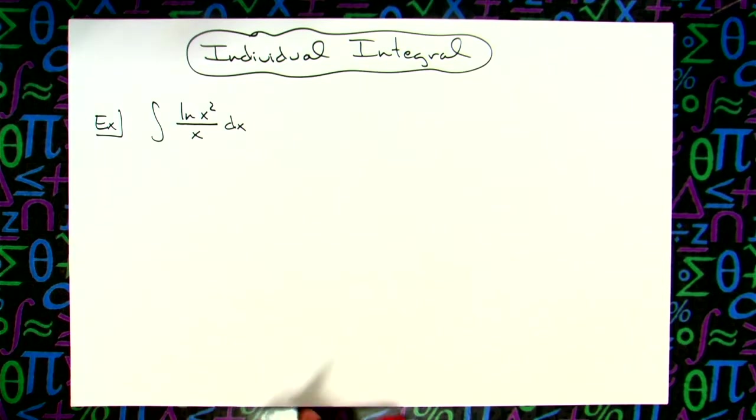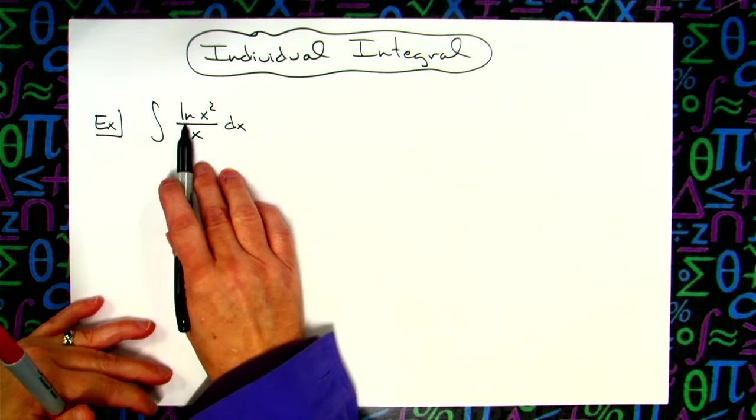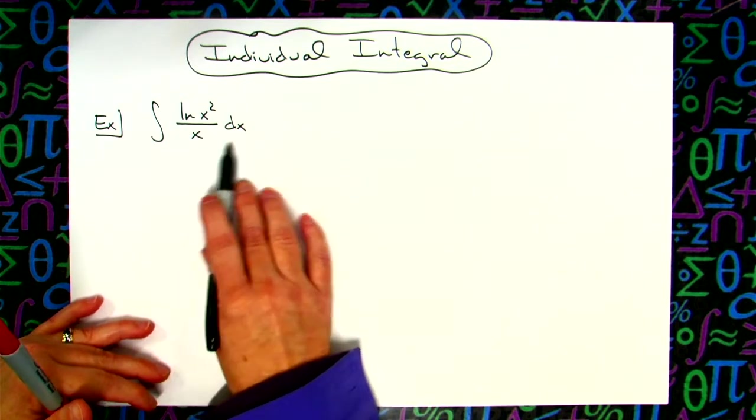In this video we're going to take a look at an individual integral. It is going to be a basic u-substitution integral that we would do in a calc 1 class. So we'll have the integral of natural log of x squared all over x is equal to dx.